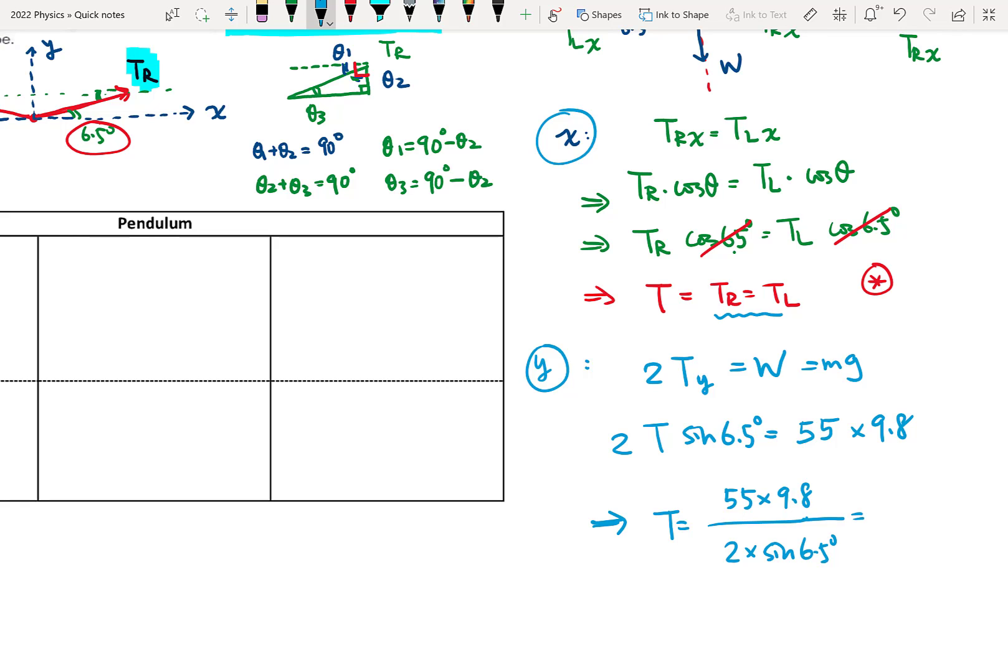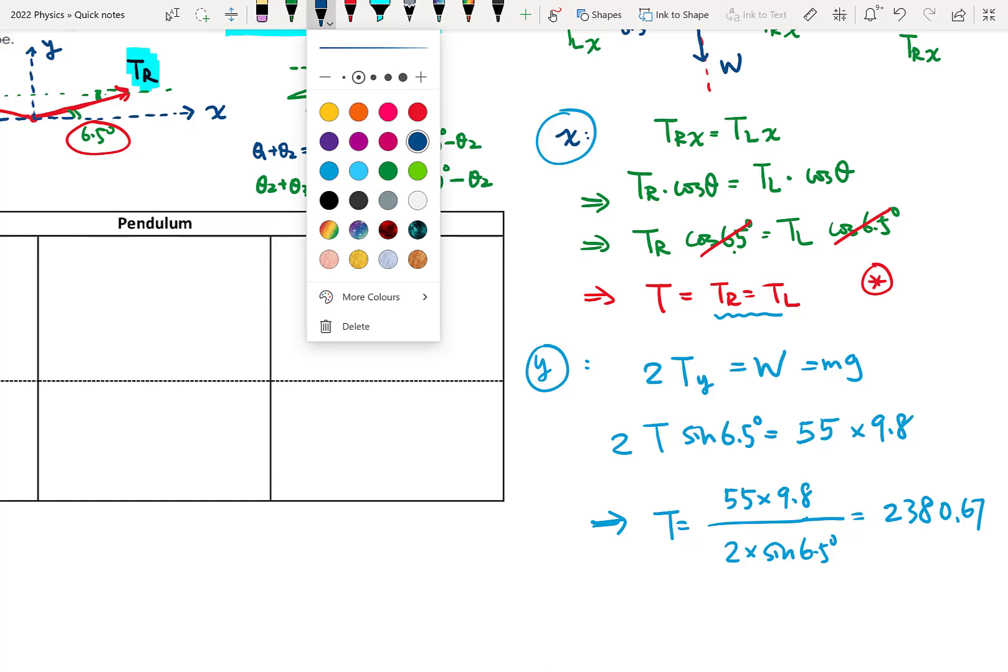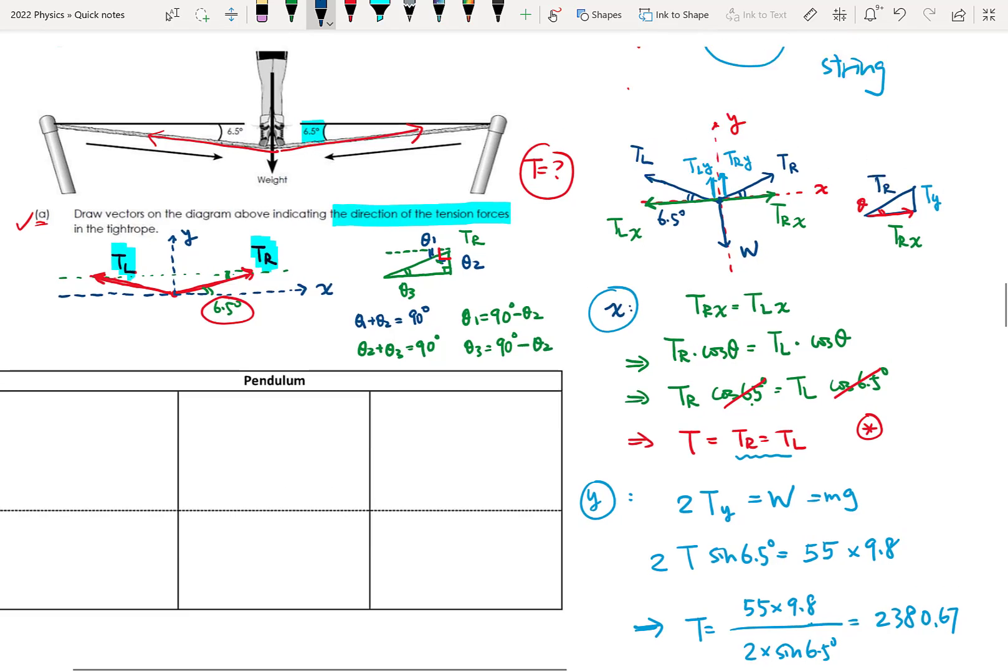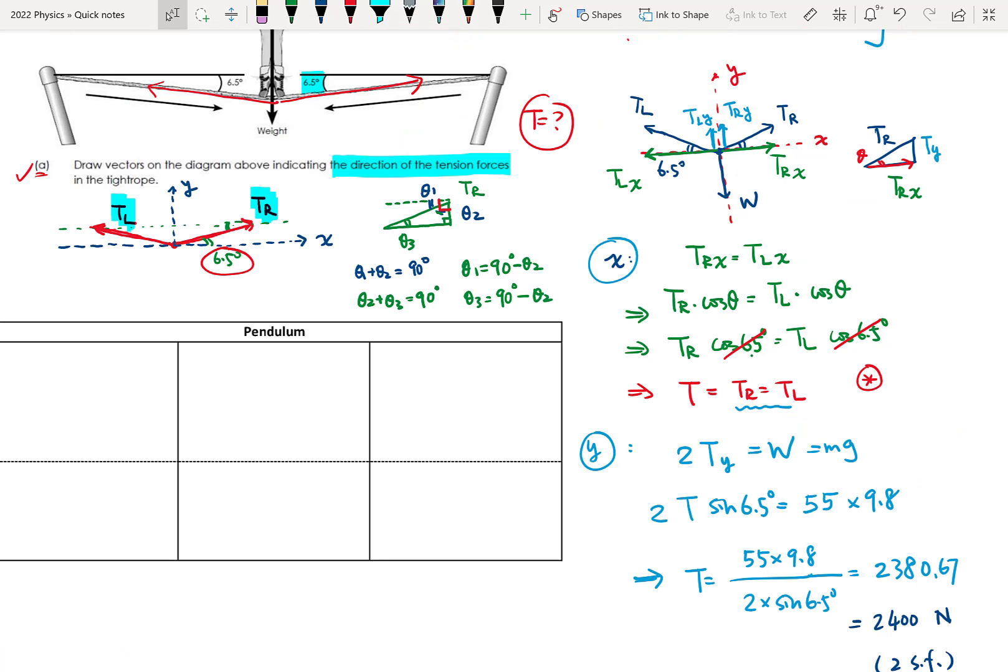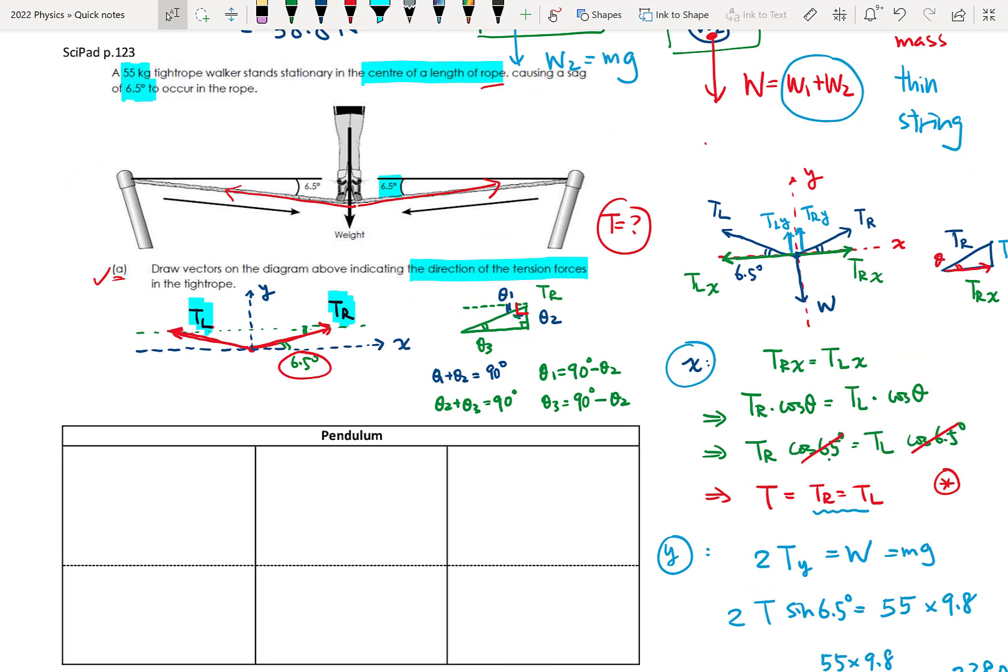55 times 9.8 divided by 2 divided by sine 6.5 degrees, equal to 2380.67. And if we round it to significant figures, how many significant do we need to have? We have 6.5 degrees, 55 kg. That will be 2 significant figures. So that will be 2400 newtons. 2 significant figures.